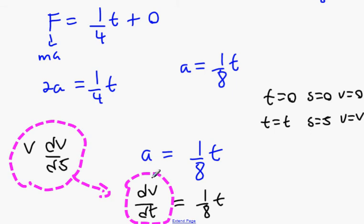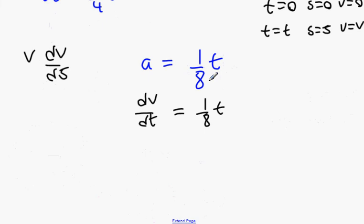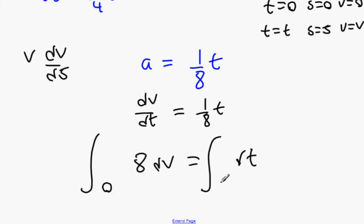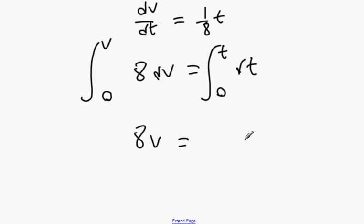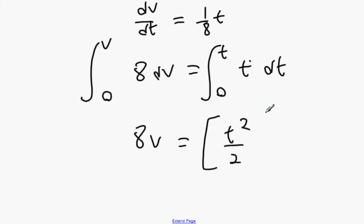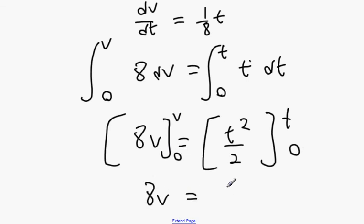We have to stick with dV/dT first — find V in terms of T, then change it to S afterwards. Integrate both sides: cross multiply to get 8 dV equals T dT. Integrate both sides with limits 0 to V and 0 to T. We get 8V equals T²/2.